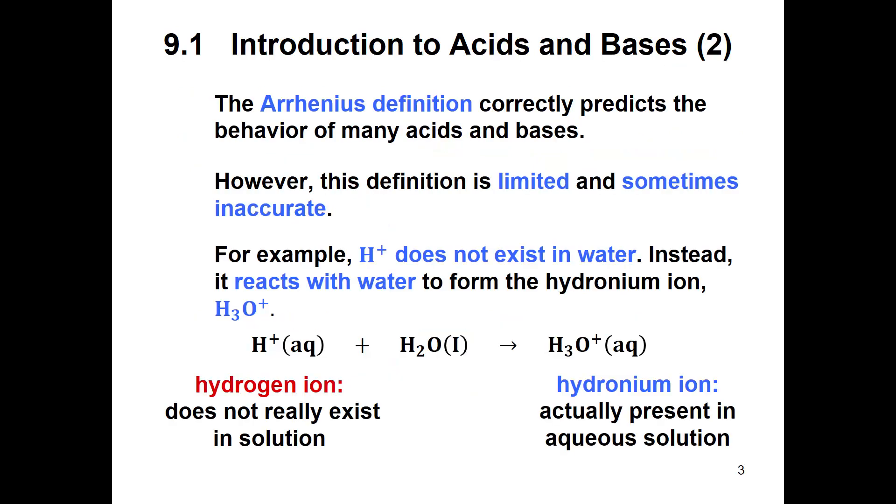The Arrhenius definition predicts a lot of the acids and bases but it's limited because it's not always a perfect definition. So H+ really doesn't exist in water. Instead it reacts with water and it forms something called a hydronium ion which is H3O+. An H+ immediately attaches to the water and forms this hydronium ion and so that's actually what's present.